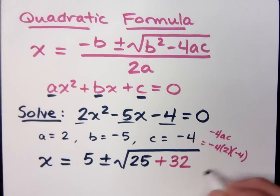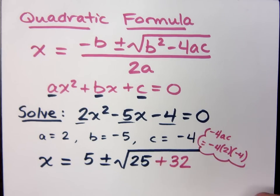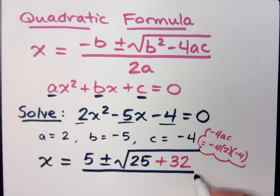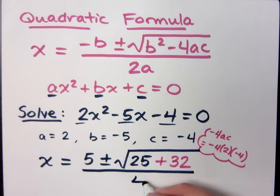The sign here will mess with a lot of people, so you've got to make sure you do this stuff out here on the side in your little thought bubble about how you're getting that number. And then this is all over 2a. Well, a is 2, so 2 times 2 is 4.